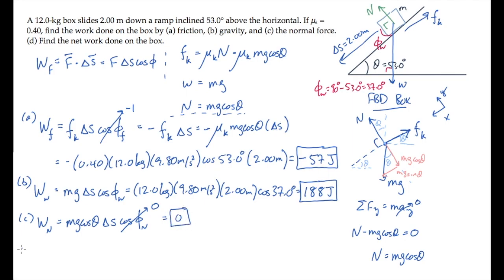Part D asks for the net work done on the box. The net work is the sum of all the individual works. So we have the work from friction, plus the work done by the weight, plus the work done by the normal force, and that equals 131 joules.